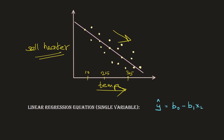Therefore, the equation will change accordingly: starting from the origin point b0, the slope of the straight line will decrease rather than increase, and the weights assigned to the variable temperature apply in this case.